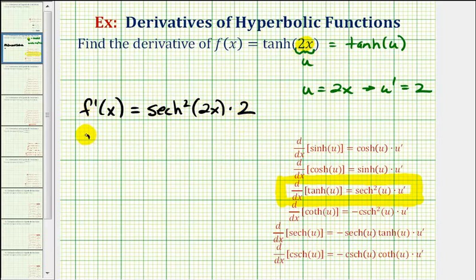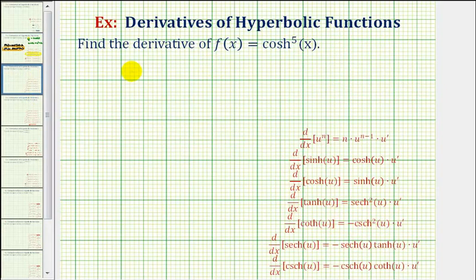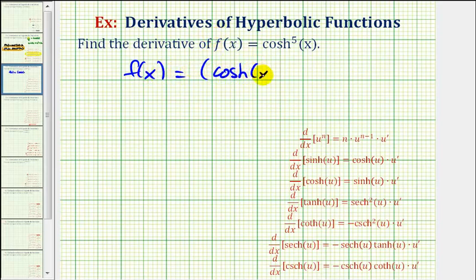Let's go ahead and rewrite this as f prime of x equals two hyperbolic secant squared of two x. Now for our second example, we want to find the derivative of f of x equals hyperbolic cosine to the fifth of x. It will probably be helpful to write this in the form f of x equals, in parentheses, hyperbolic cosine x raised to the fifth power.